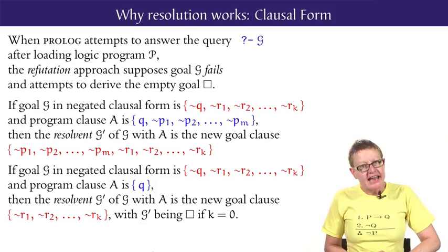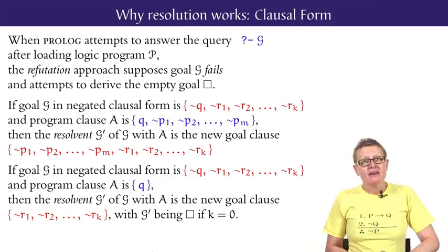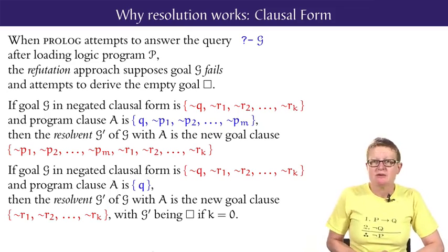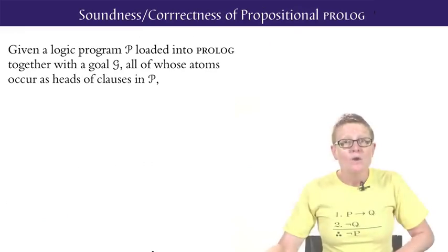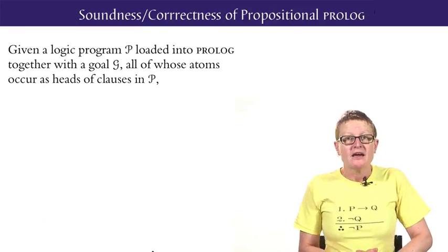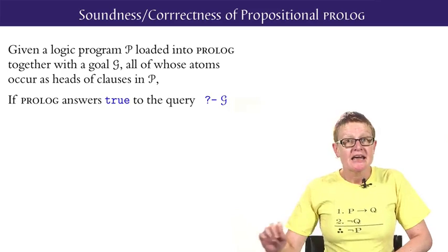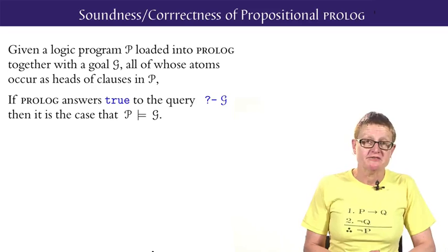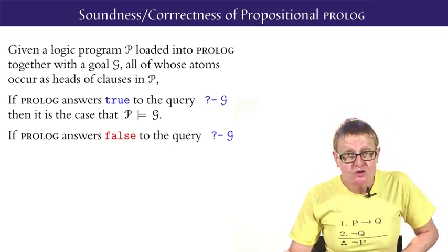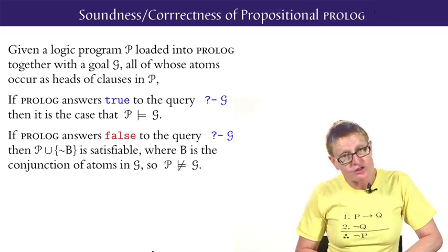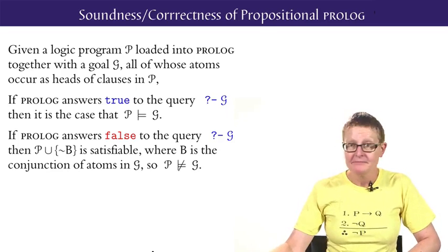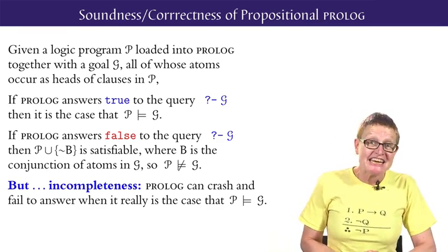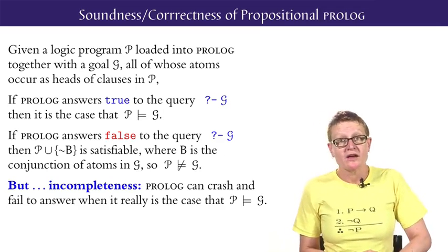Soundness requires that if a negated goal clause for g is satisfiable, then the negated goal clause for a resolvent g prime must also be satisfiable, with g prime the resolvent of g with any program clause. We summarise the soundness or correctness of propositional Prolog. Given a logic program P and goal G, if Prolog answers true to the query of G, then G really is a logical consequence of P. If Prolog answers false to the query of G, then G is not a logical consequence of P. But there is incompleteness. Prolog can crash and fail to answer when G is a logical consequence of P, as we saw in the loop example.